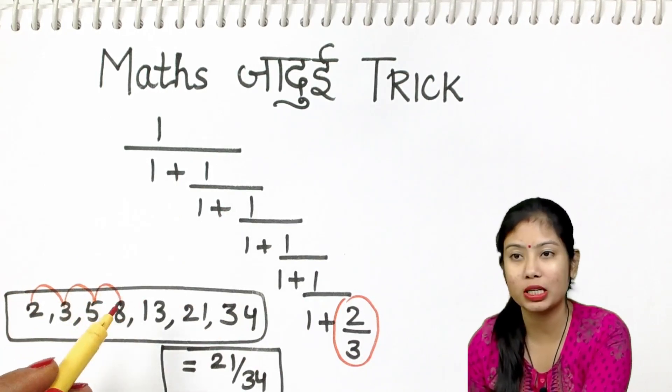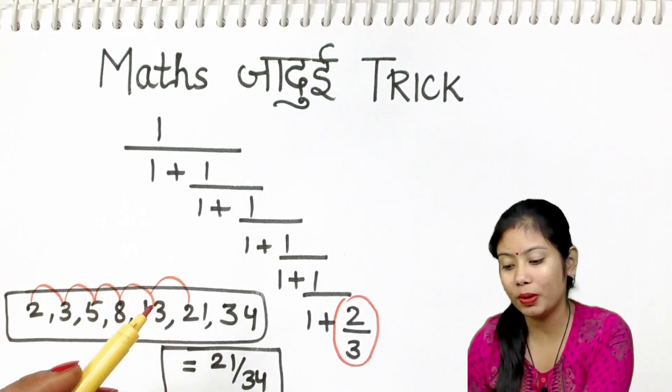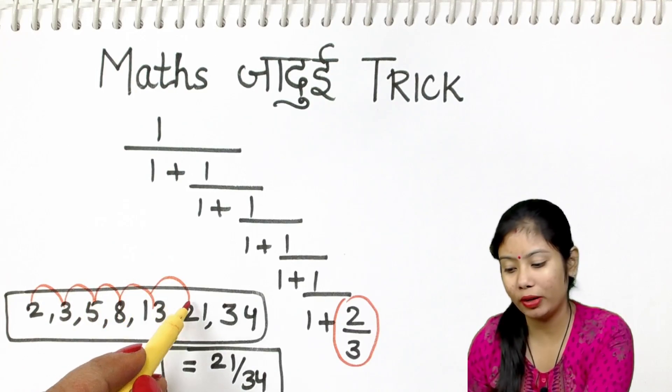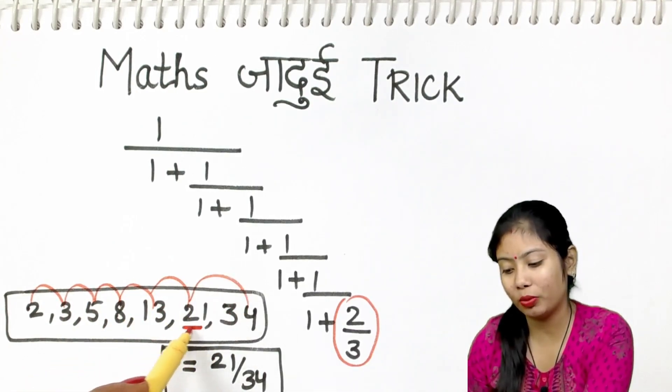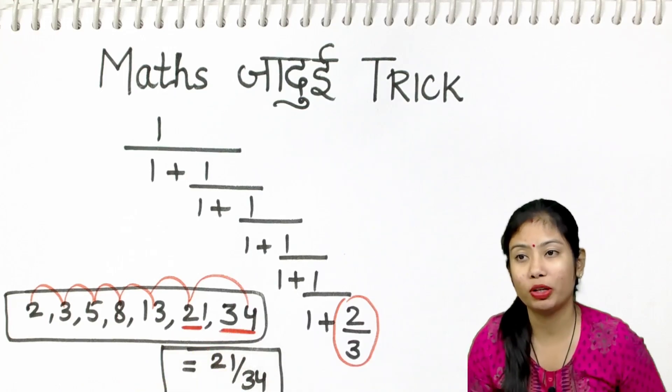So, 2 plus 3 is 5, 5 plus 8 is 13, 13 plus 8 is 21, 21 plus 13 is 34. So, this will be 21 in the numerator and 34 in the denominator.